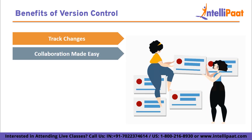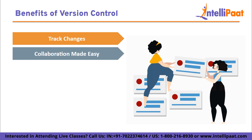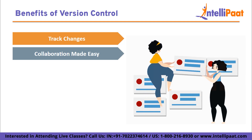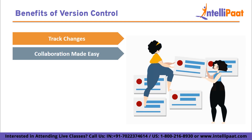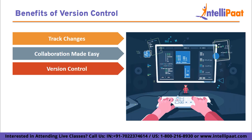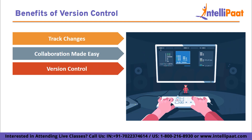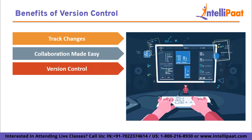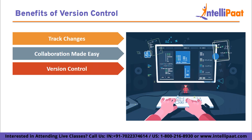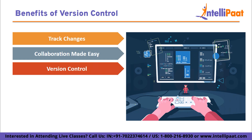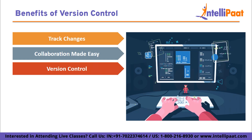Collaboration made easy: version control enables seamless collaboration among team members. Multiple people can work on the same project simultaneously, each with their own copy. Version control systems provide efficient mechanisms to merge and synchronize changes made by different contributors, ensuring a smooth collaboration process. With version control, you also have a complete history of project versions. You can access any previous state or iteration of your project, allowing you to compare different versions, roll back to earlier versions, or recover lost work. This capability provides a safety net, enabling you to experiment with new ideas without fear of irreversible consequences.